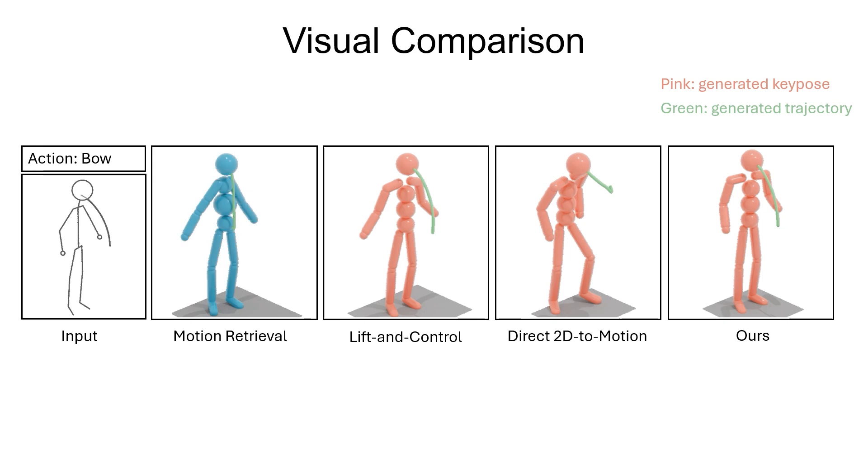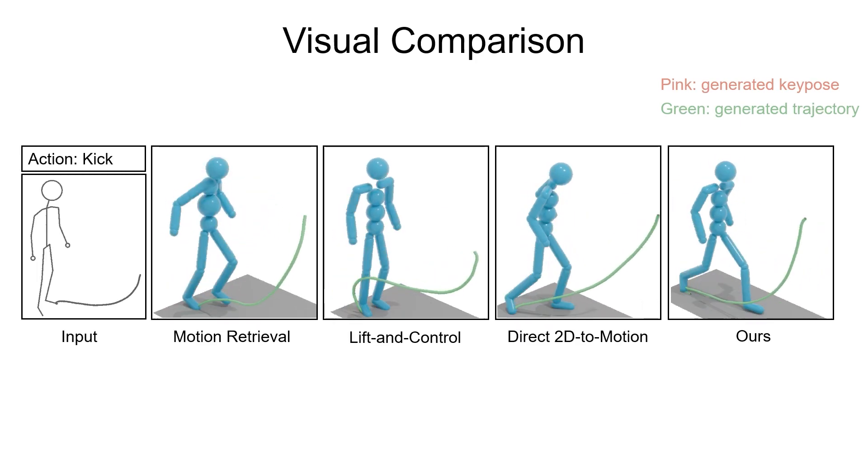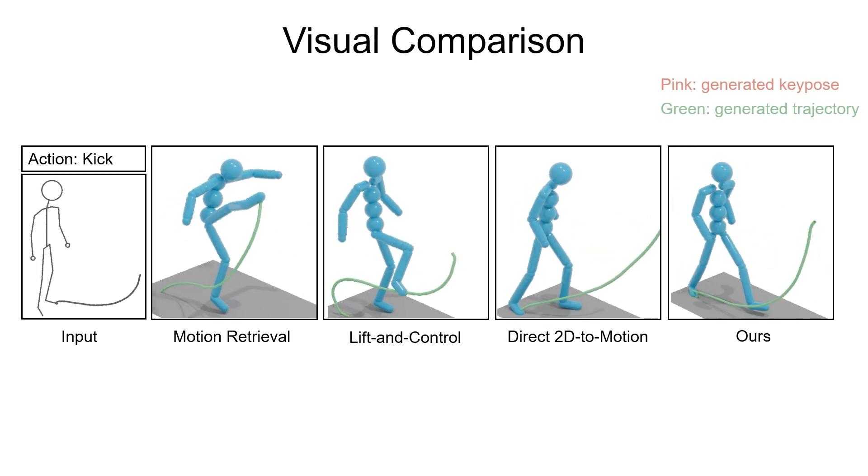Another example is shown here, with similar observations. Here are more examples. Pay attention to either the key pose or the trajectory deviation.